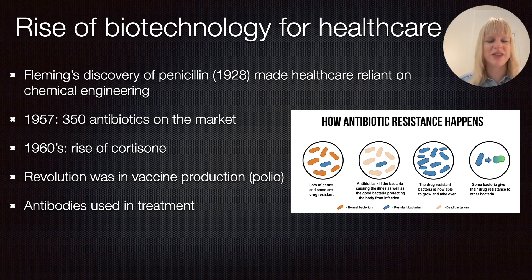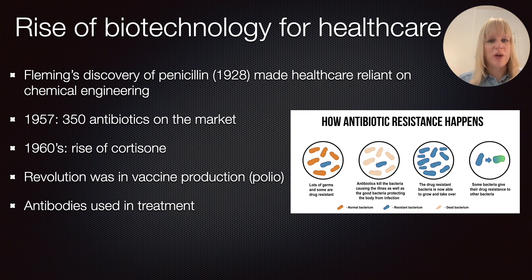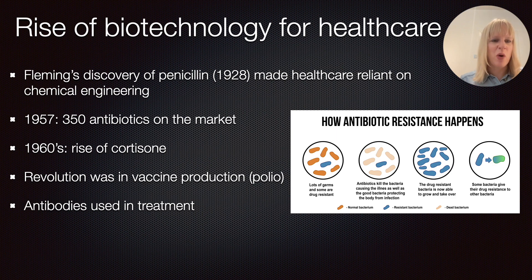What was unique about Salk's case is that, unlike today's focus on patents, he was committed to equitable access — there was no patent, so he never made a profit from it. More recently, the use of antibodies — particularly monoclonal antibodies — has rapidly taken off in cancer treatments and autoimmune diseases. You can recognize these medications because their names end in '-mab', indicating a monoclonal antibody.